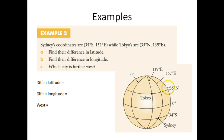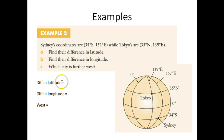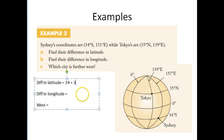We've got Tokyo here at 35 degrees north and Sydney here at 34 degrees south. Now, they're in different hemispheres, so to find the difference or the distance between the two, I need to add them together. So, 34 plus 35 gives me 69 degrees.